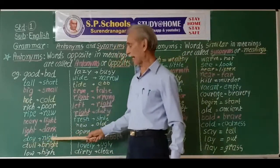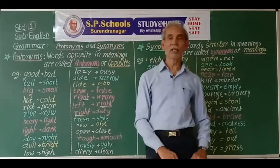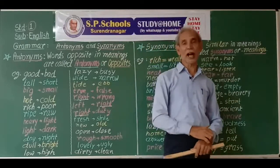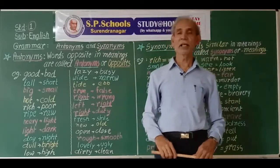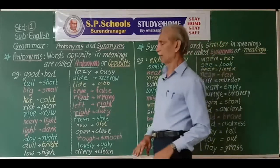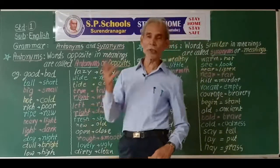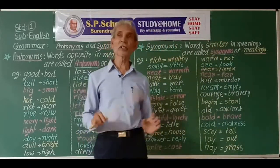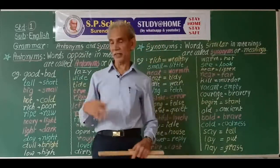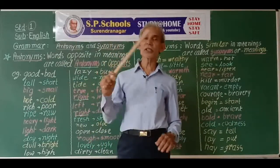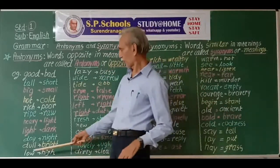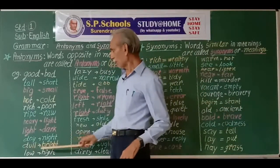Day and night are opposites. When we observe the sun in the sky, it is day, and when the sun is not in the sky, it is night — sunrise and sunset. Dull and bright are opposites in the sense of color — a dull color versus a bright, shining color.